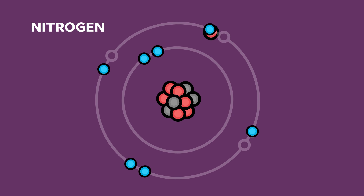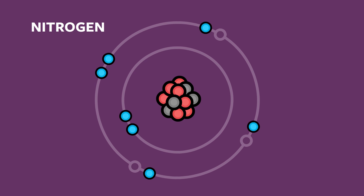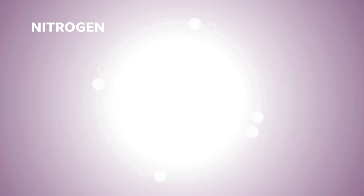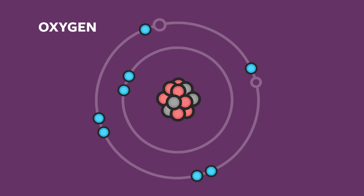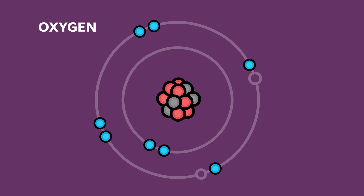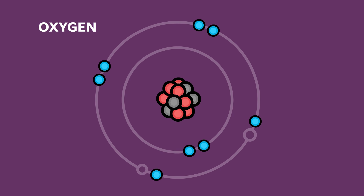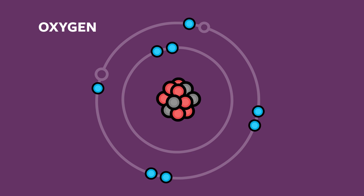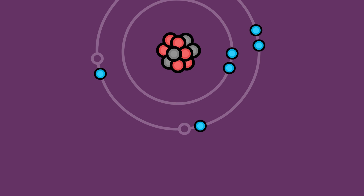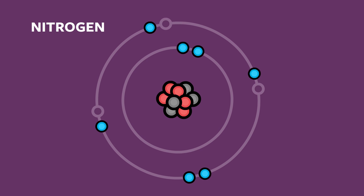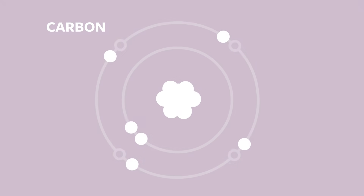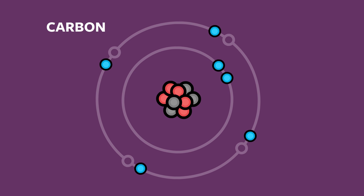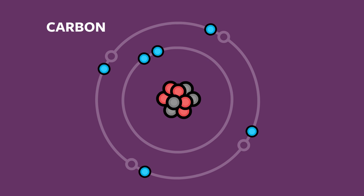On the other hand, if you were to add or subtract just a single proton from nitrogen — assuming you had the technology to do so — you would completely change its chemical properties, so much so that we would no longer call it nitrogen. Adding just a single proton to a nitrogen atom would transform it into an oxygen atom. Taking a proton away from nitrogen would transform it into carbon. In other words, the number of protons an atom contains determines the type of atom it is.